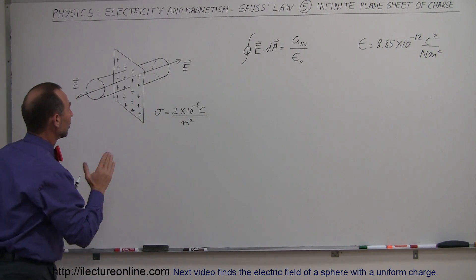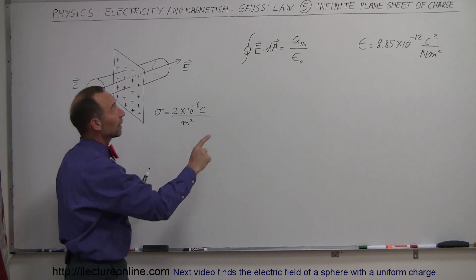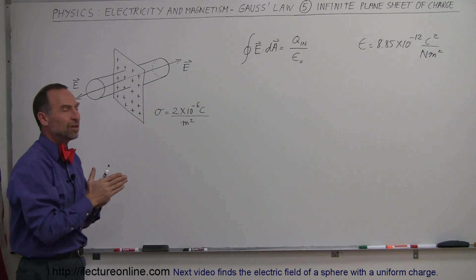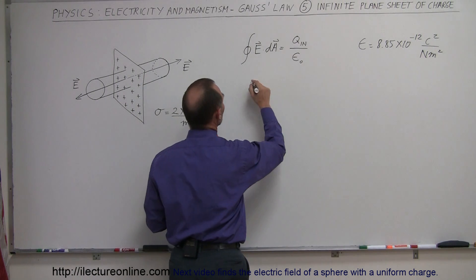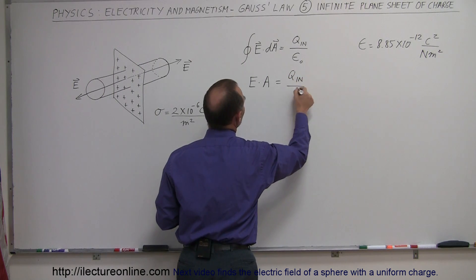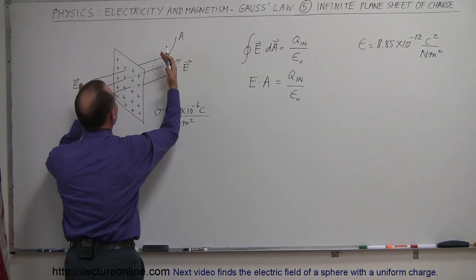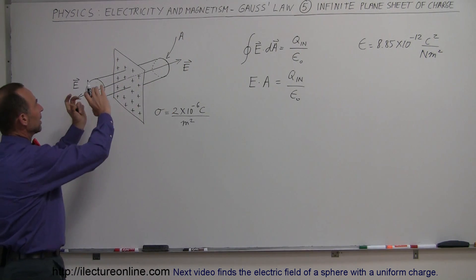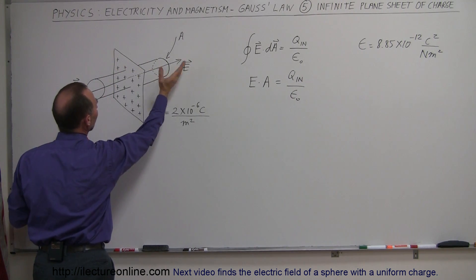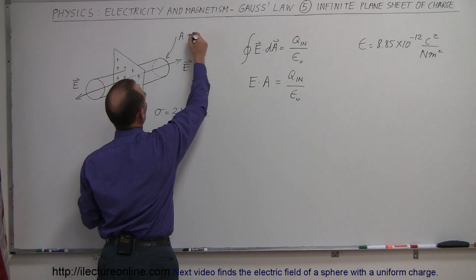The electric field will emanate directly perpendicular to the surface, which means the direction of the electric field will be parallel to the normal to the surface — there's no angle between them. We can then say E times the area equals Q inside divided by epsilon sub nought. The area we're concerned with is the surface area of the ends of the cylindrical Gaussian surface. Electric field will only emanate through the ends on both sides, so the area is simply pi r squared.